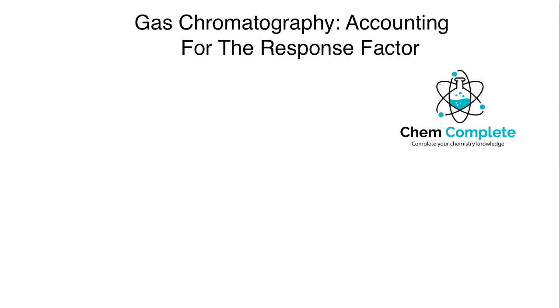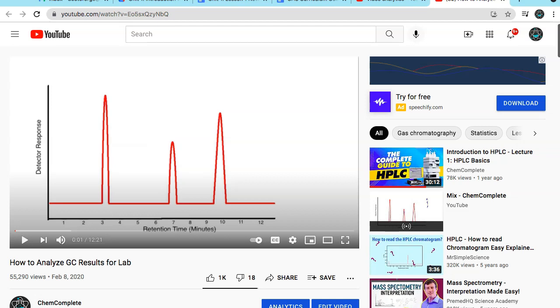So this is actually an overdue lecture. I really wanted to do this quite some time ago. This actually came out of some comments from this video that I did a while back. This is one of the more popular videos on my channel, which is how to analyze gas chromatography results for a lab. Now, the context of this particular lecture was dealing with an introduction to gas chromatography lab. So usually this is done in general chemistry or in organic chemistry. A lot of times if you're dealing with dehydration of alcohols into alkenes, you'll get a mixture of cis-trans isomers. And then you'll run it through here and you'll get the various results.